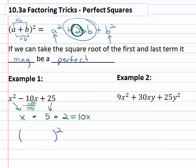It's going to factor to something squared. We take the square root we just found, the sign from the middle, and the square root we just found. This is x minus five squared.